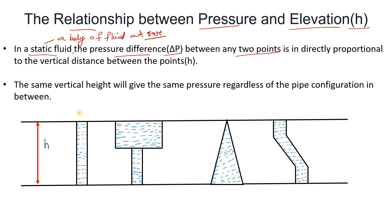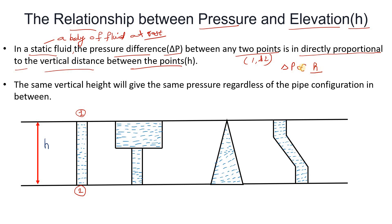Let's suppose this is your point one and this is your point two. The pressure difference between any two points is directly proportional to the vertical distance between the points. So delta p is directly proportional to h, where h is the height from point one to point two.